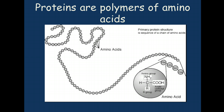What's different is that in cellulose, starch, glycogen, and chitin, every single sugar monomer is exactly the same as every other one. But in a protein, the amino acids are different from each other.